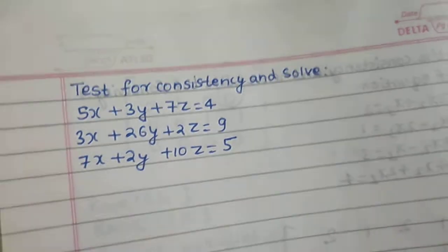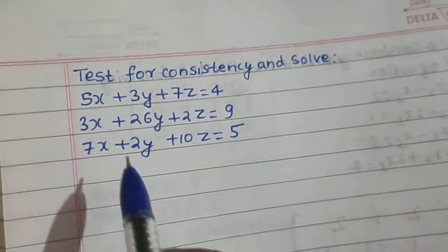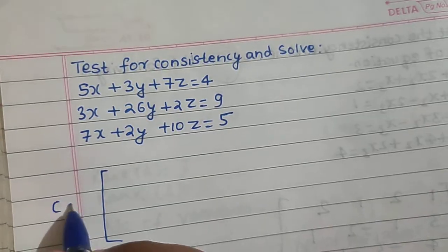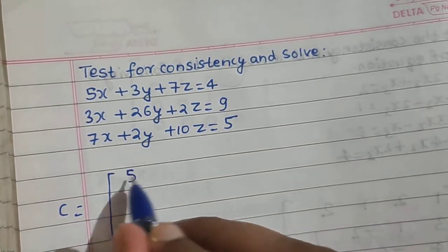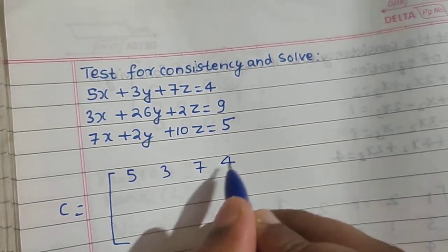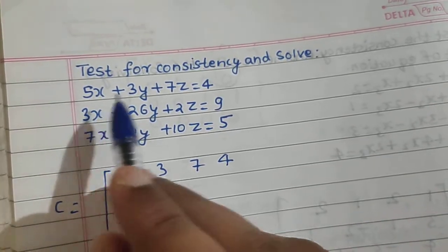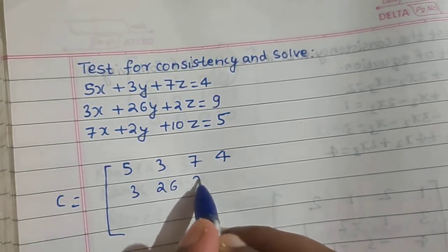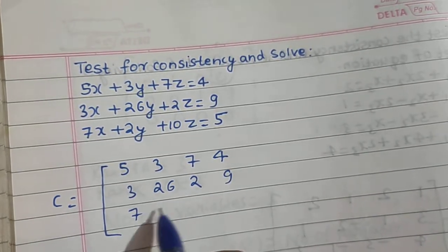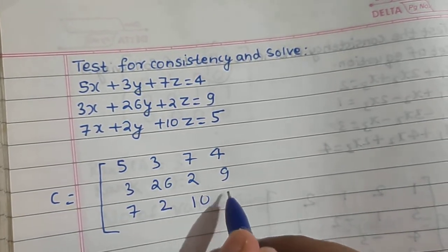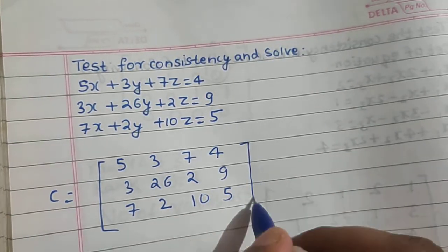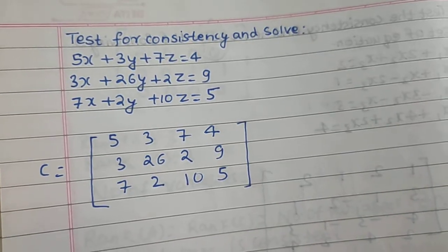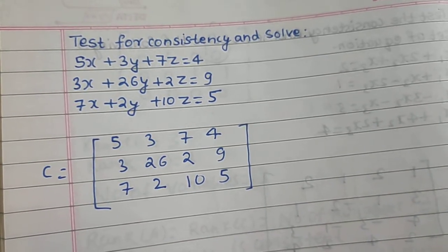So let's start. Whenever you get your equations, write the augmented matrix. So C equals — just simply 5, 3, 7, 4. Then 3, 26, 2, and 9, and finally 7, 2, 10, and 5.